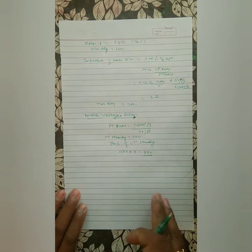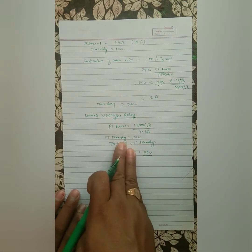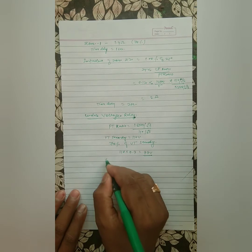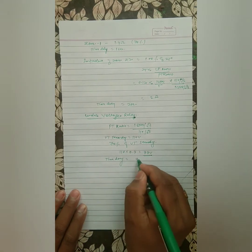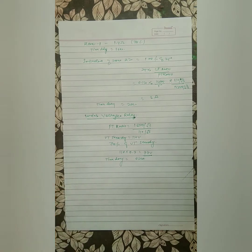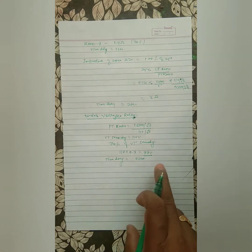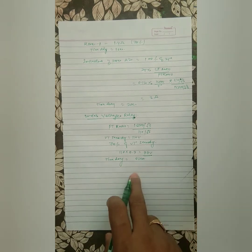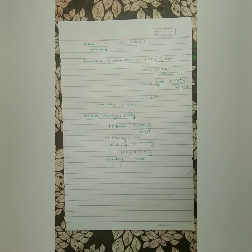We have to put 77 volts in the relay to get the under voltage setting to operate. The time delay is 0 seconds — instantaneous. So when the voltage drops to 77 volts, the relay will take 0 seconds to trip the system on under voltage.